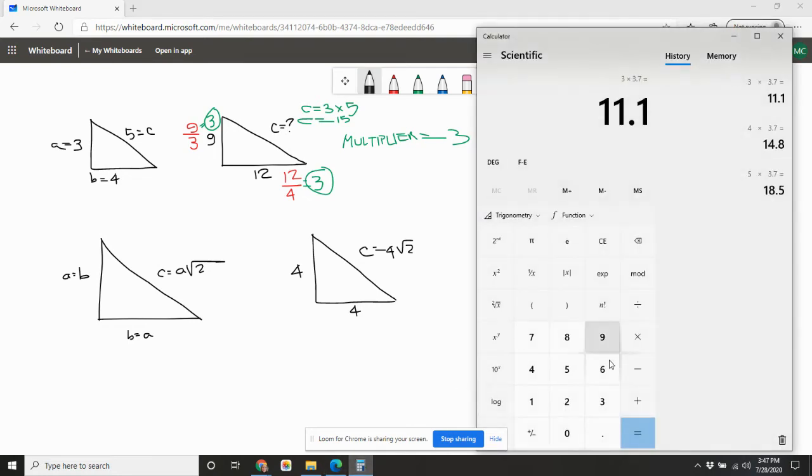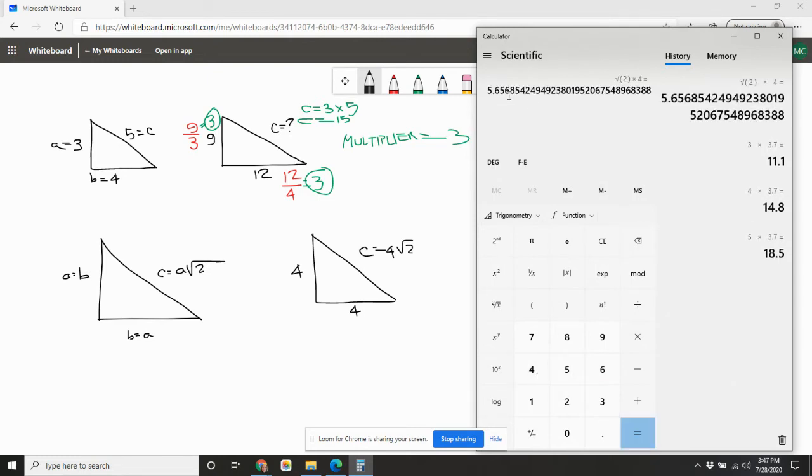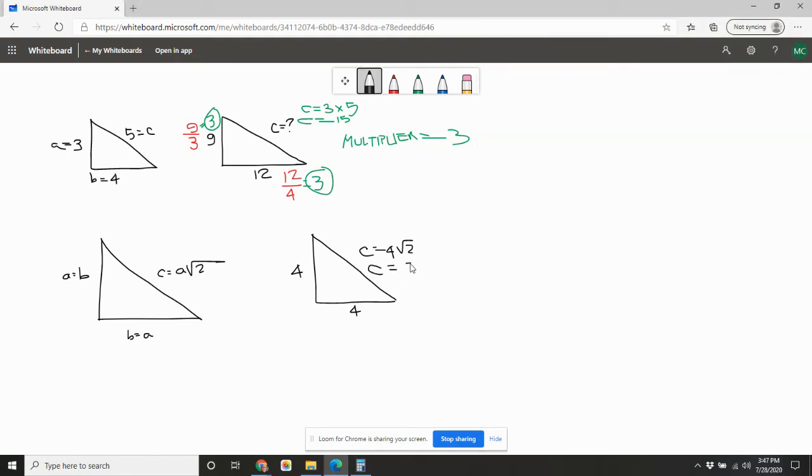And if we do that in our calculator, so I think I have to do 2 squared. There's that number 1.414 times 4 is 5.656. I'll just round to the third decimal place. So that means C equals 5.657.